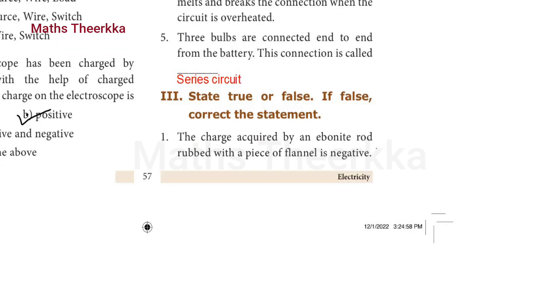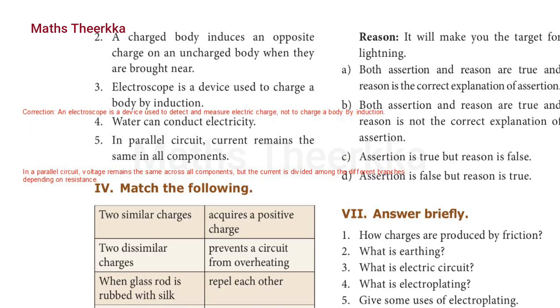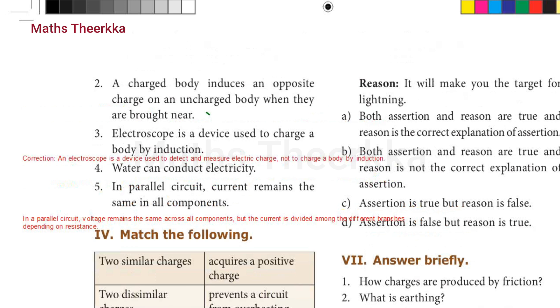Third roman: state true or false. If false, correct the statement. First one: the charge acquired by an ebonite rod rubbed with a piece of flannel is negative. The answer is true. Second one: a charged body induces an opposite charge on an uncharged body when they are brought near. The answer is true.